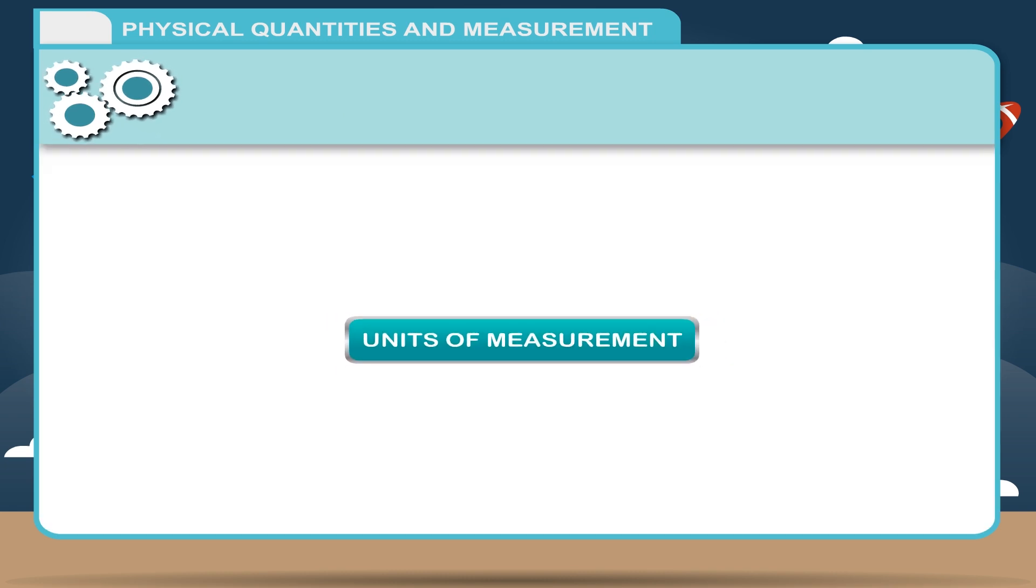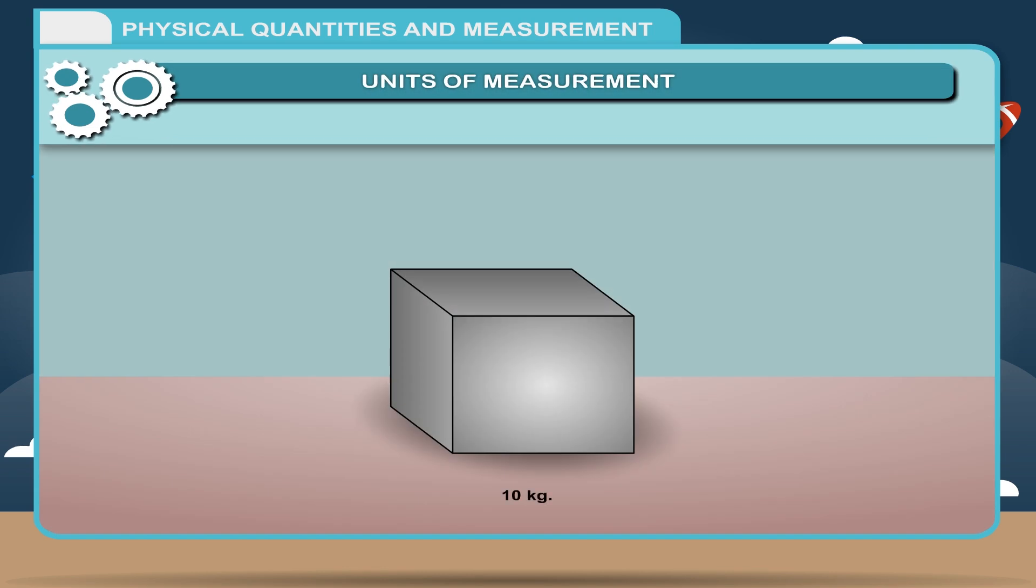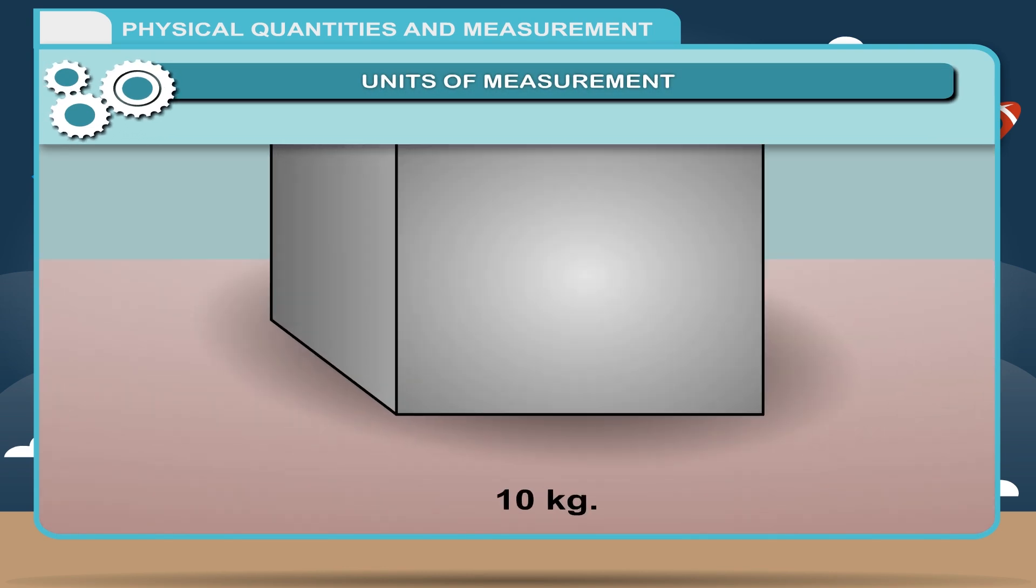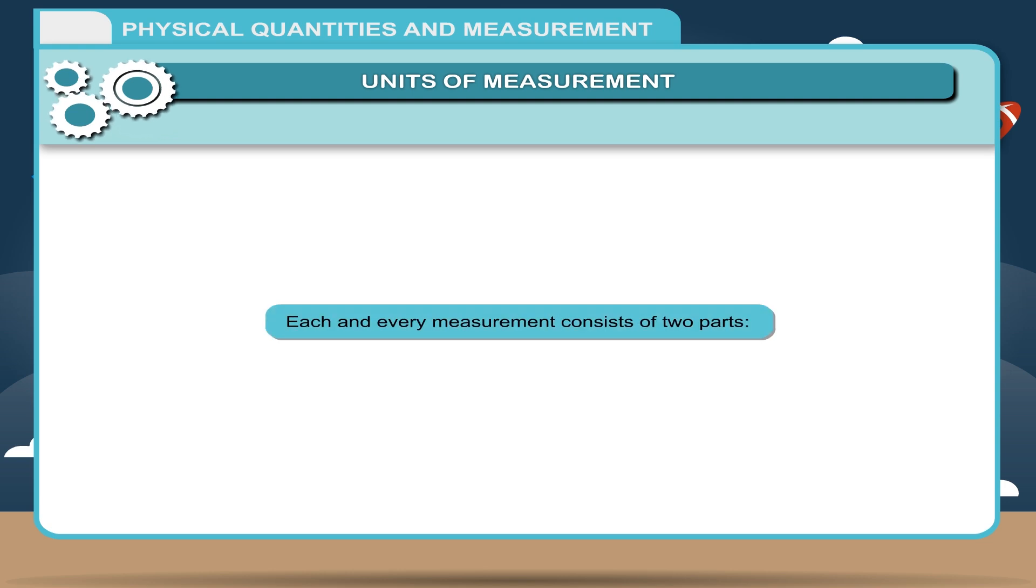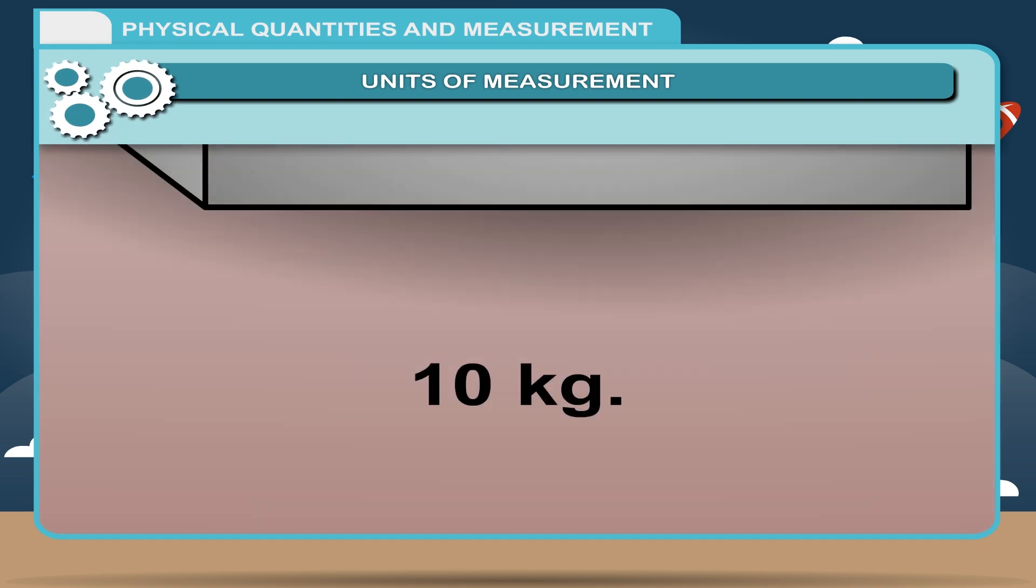Units of measurement: Measurement requires the comparison of an unknown quantity with some known fixed quantity of the same kind. This known fixed quantity is called the unit. Each and every measurement consists of two parts: A number called numerical value, and a symbol or alphabet that denotes the unit associated with it.